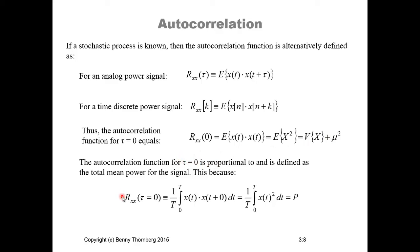We can analyze the autocorrelation function for τ equal to zero for this power signal by integrating from zero to T, where T is the period of the power signal. We divide by T and integrate x(t) multiplied with x(t + 0), meaning x(t) squared. We can recognize this as the power integral.